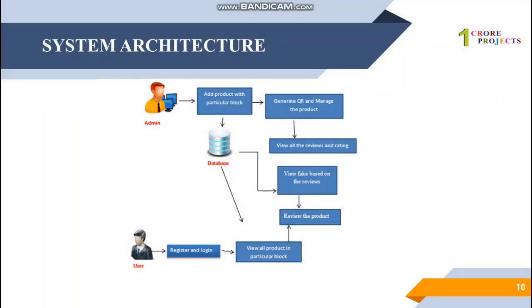In the system architecture, once the admin adds a product, it is assigned to a particular block, and every product is converted into a QR code. The admin manages files, views customer reviews, and monitors how customers are giving reviews. The user can register, login, view all products in the database, and review products.